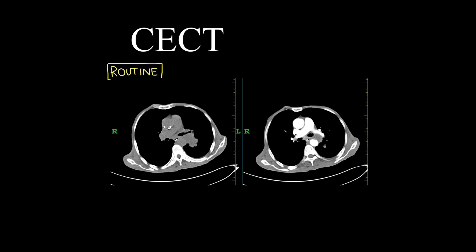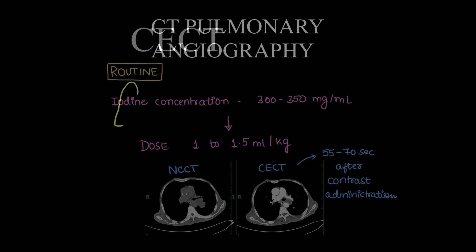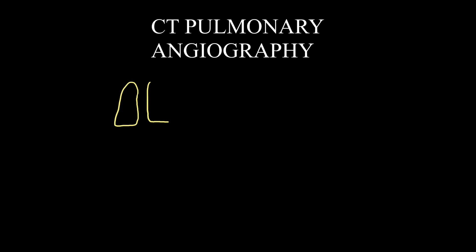The contrast dose is 1 to 1.5 mL per kg of the patient. The contrast-enhanced scan is taken 55 to 70 seconds after contrast administration. Now, for the angiography protocol to look for pulmonary arteries: